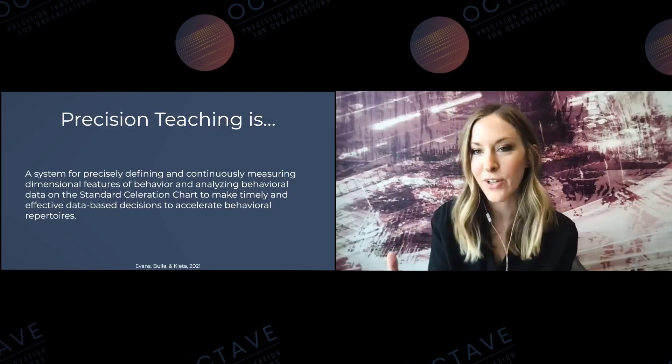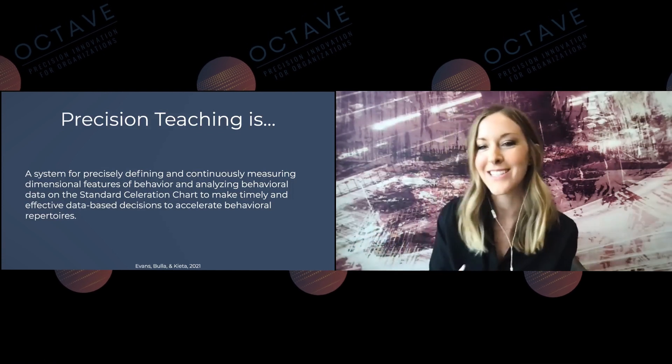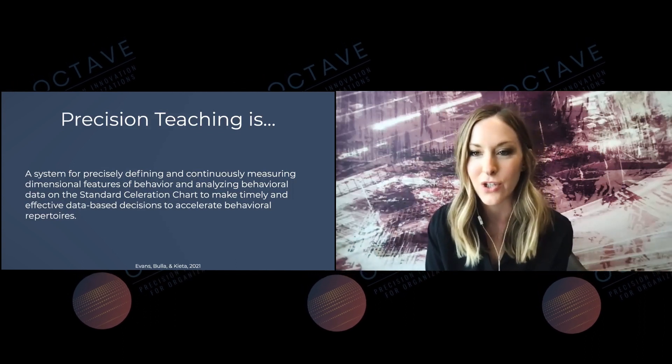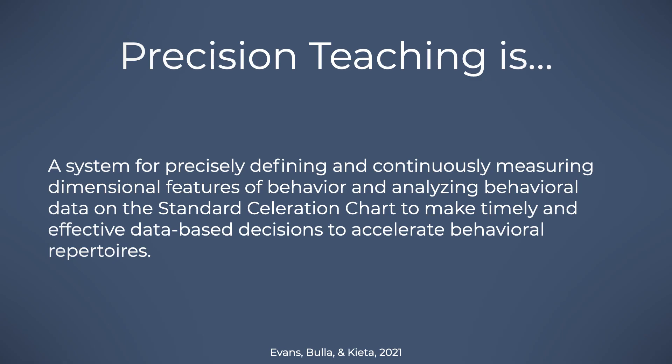Using all the critical features and putting them into our definition — that's something I learned from Susan Markle, one of my favorite instructional designers. She talks about what it takes to have an effective definition: it should hint at or explicitly state all the critical features. So it's a bit of a long sentence, but this is what we came up with: Precision teaching is a system for precisely defining and continuously measuring dimensional features of behavior and analyzing behavioral data on the SCC to make timely and effective data-based decisions to accelerate behavioral repertoires. This definition is very similar to the one you heard me say with Ryan years ago — we just updated the language a tiny bit, but I'm feeling pretty good about where we landed.